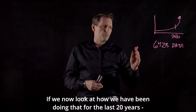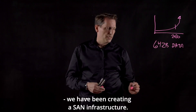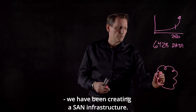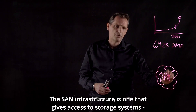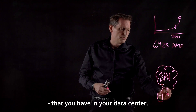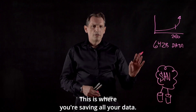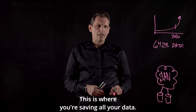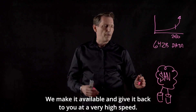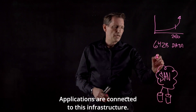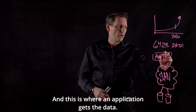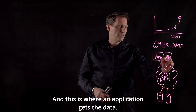If we look at how we have been doing that for the last 20 years, what we have been doing is creating what we call a SAN infrastructure. The SAN infrastructure gives access to storage systems that you have in your data center. This is where you are saving all your data, protecting data, making it available, and giving it back to you at a very high speed. Applications are connected to this infrastructure and this is where applications get their data.